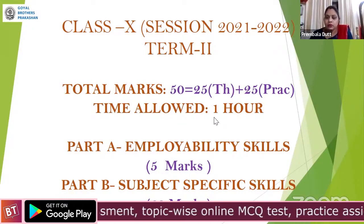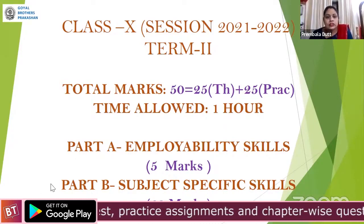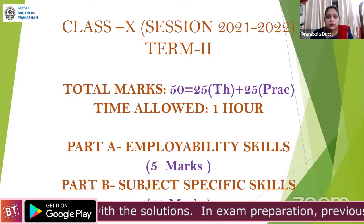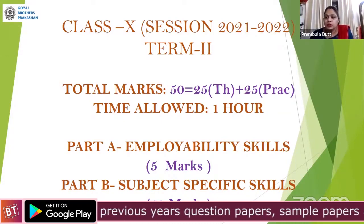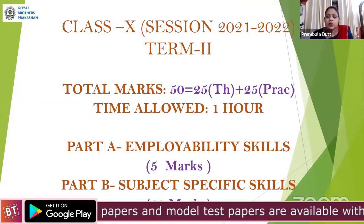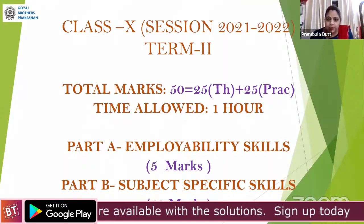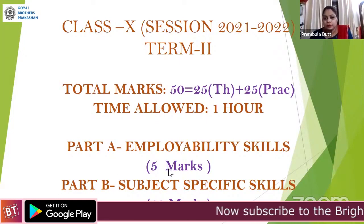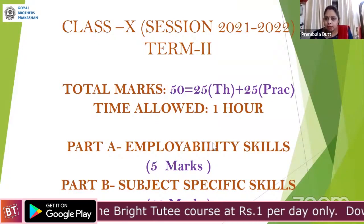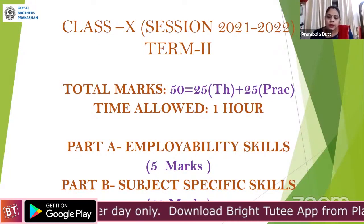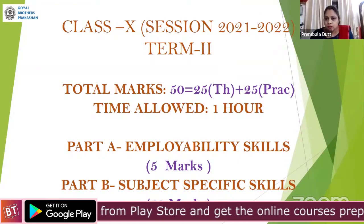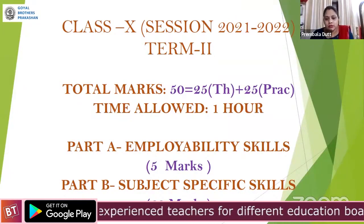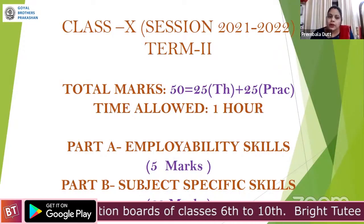The total time allocated for this subject is one hour. Part A is five marks; part B is 20 marks. Generally, students open the book and start preparing from part A because they want to start from chapter one. But I must tell you — always suggest them to start preparation from part B, because the weightage of part B is 20 marks whereas part A is only five marks. Students waste most time studying employability skills which are worth only five marks.